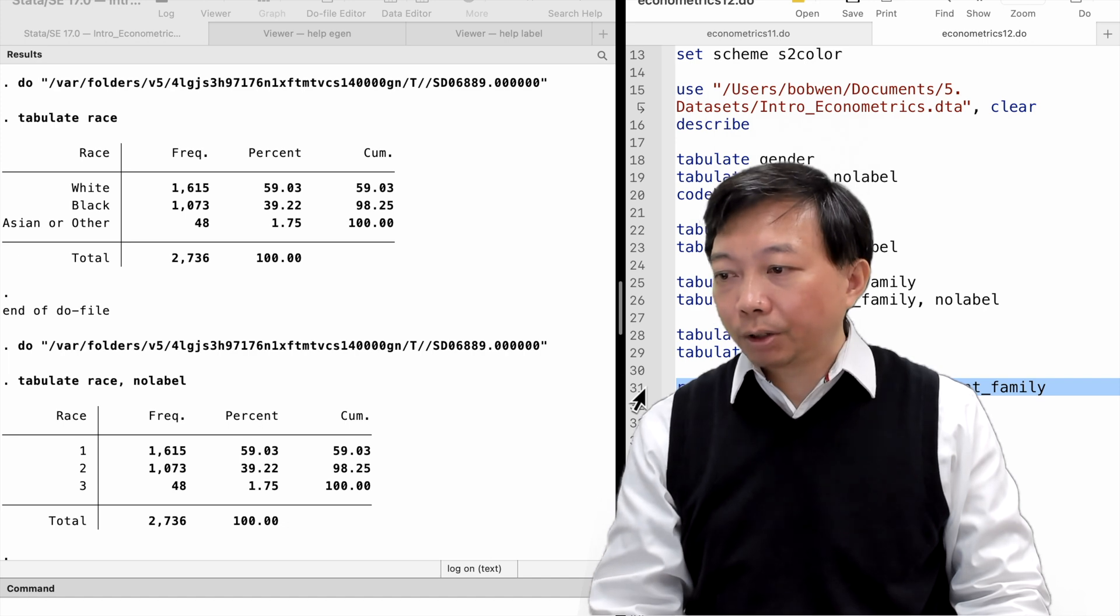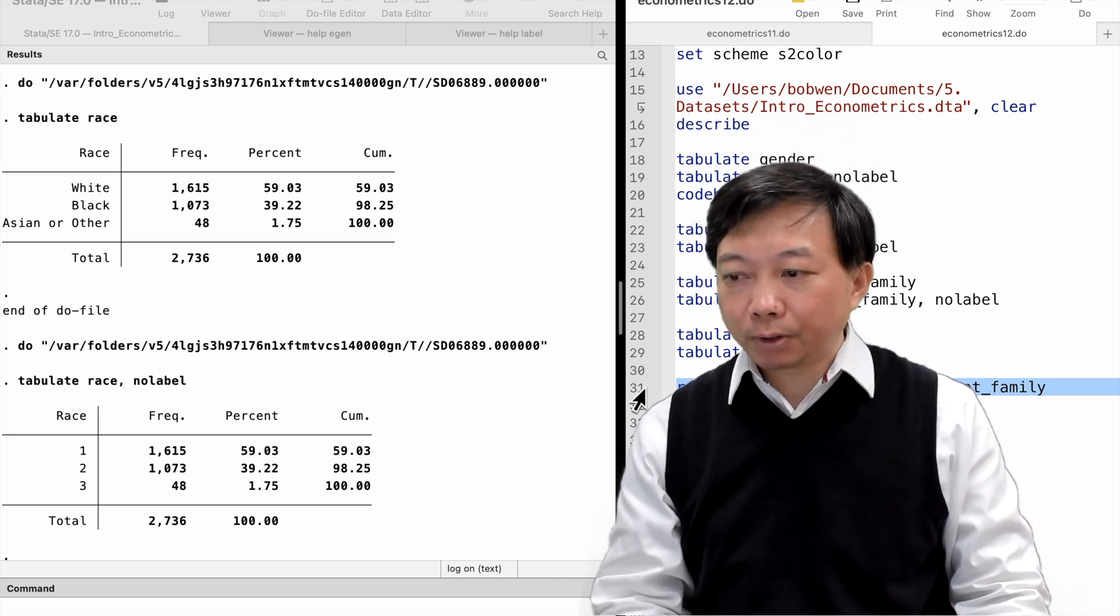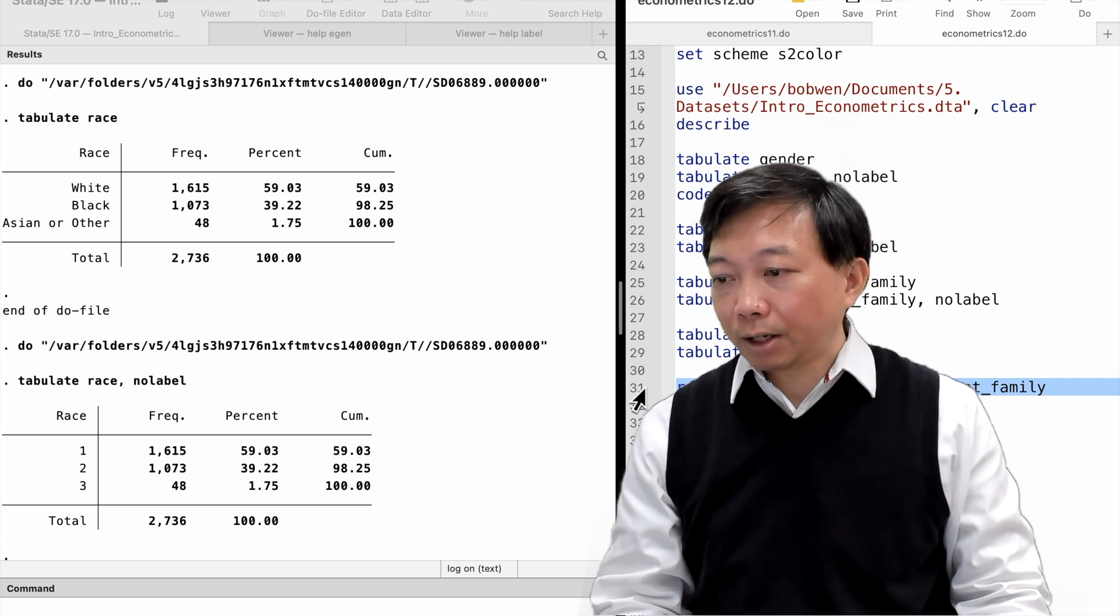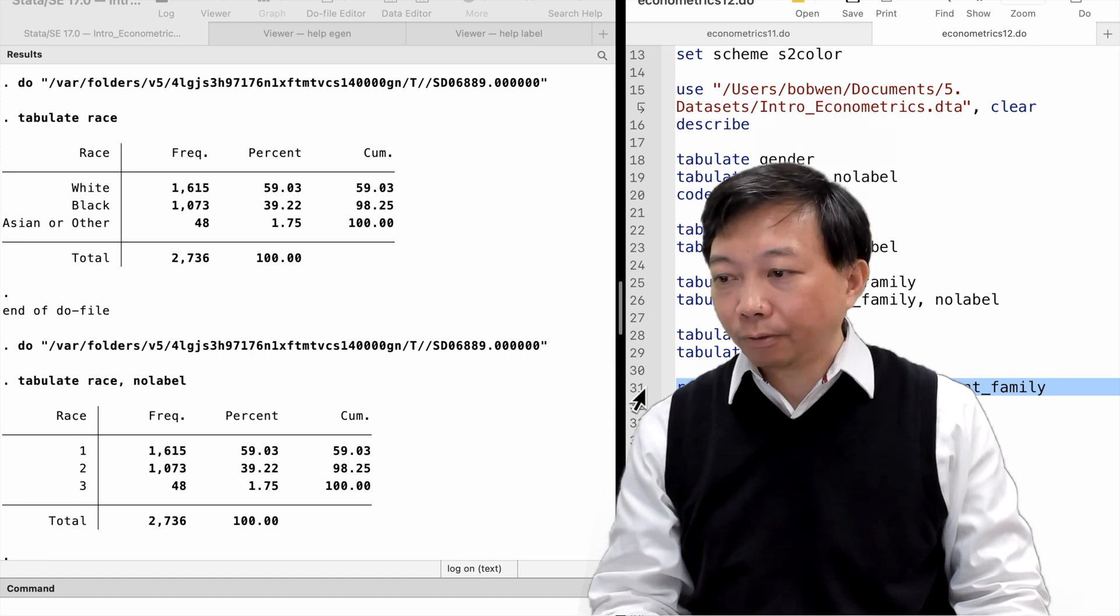In Stata, we use the command tabulate to obtain the frequency and percentage of each category. The other variables in this dataset are continuous variables such as age, hourly wage and work hours.